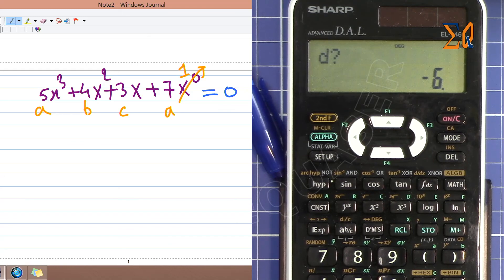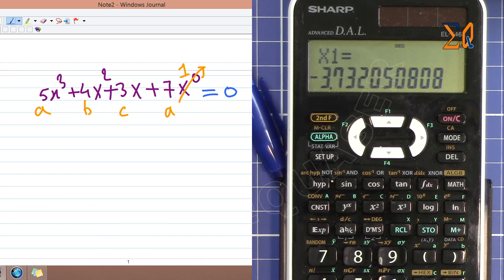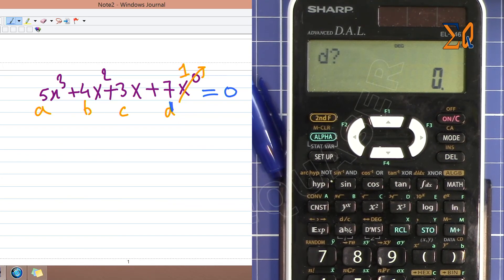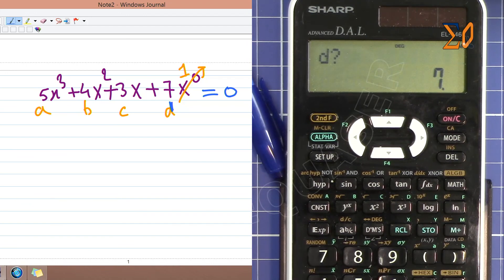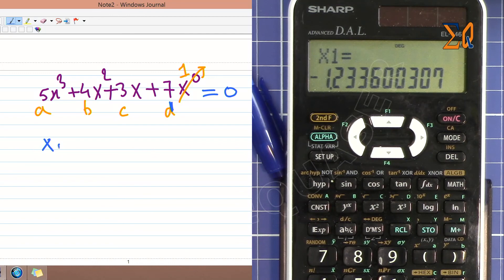So let's enter the value. For A is 5, B is 4, C is 3, D is 7. Now x₁ is -1.2336.